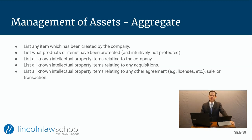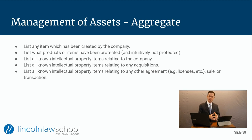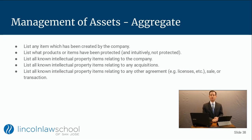Let's talk briefly about each of these categories and what you would actually do if you were managing a company's IP. The first is aggregate — that's our A. Some of the things you would do here: list any item created by the company, list what products or items have been protected, and list all known IP items relating to the company, acquisitions, and improvements — such as cross-licensing agreements, since those represent rights you now hold. If you're acquiring a company, you'd also want to pull those acquired patents into your global portfolio.